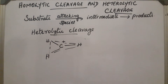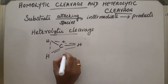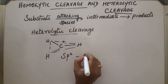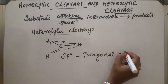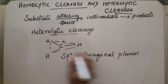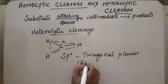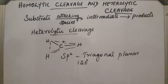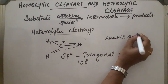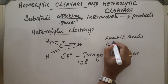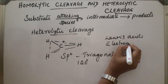The carbocation is sp2 hybridized and the shape is trigonal planar, with a bond angle of 120 degrees. These ions are electron deficient, so they are also called Lewis acids or electron acceptors — they can accept electrons.